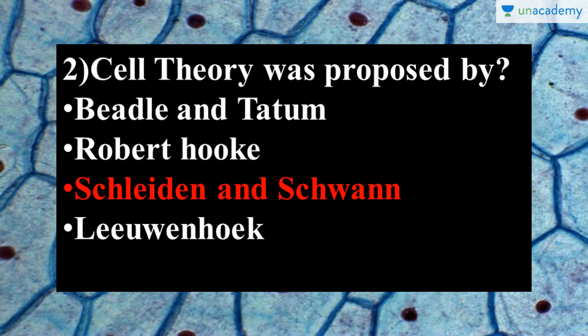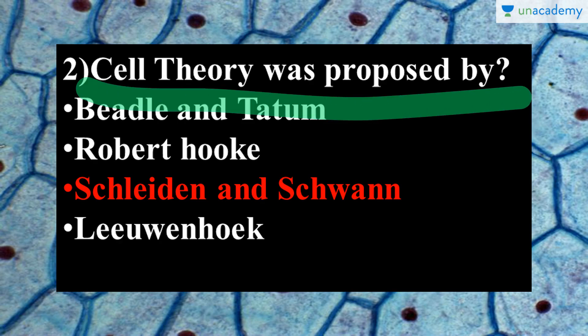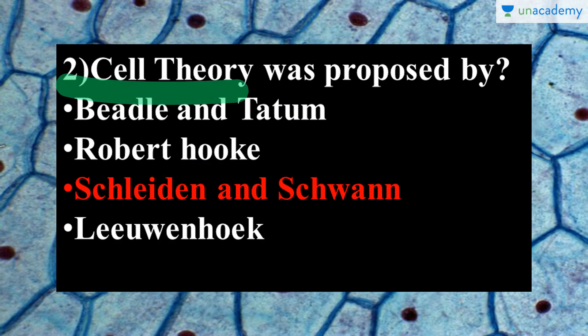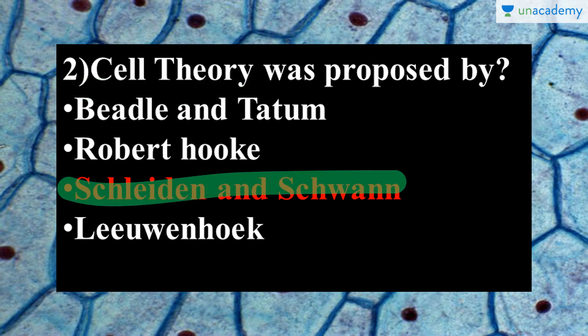The second question is: cell theory was proposed by whom? Cell theory concerns three personalities. First are Schleiden and Schwann, who proposed the cell theory independently, and later Virchow coordinated with them. These three persons proposed the cell theory, explaining that cells are the basic structural and functional unit of all living organisms and that cells divide and multiply for the organism's growth. The correct answer is Schleiden and Schwann.